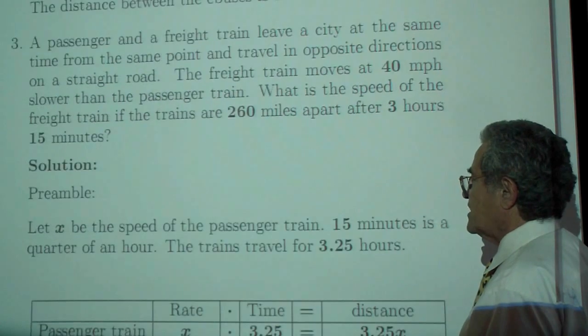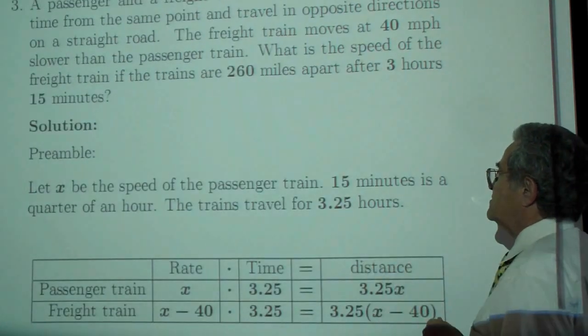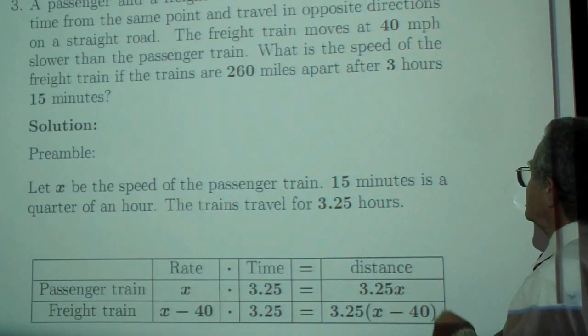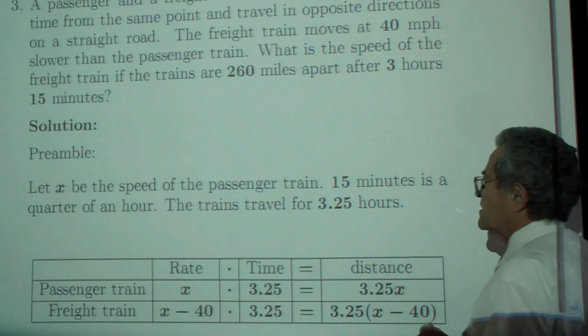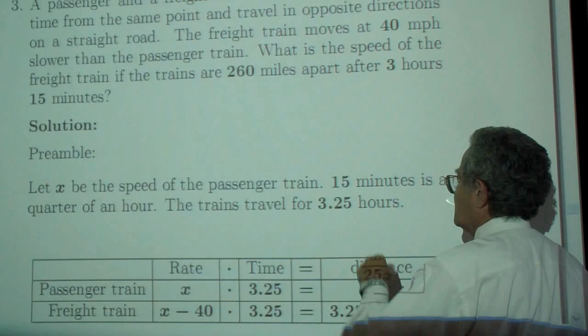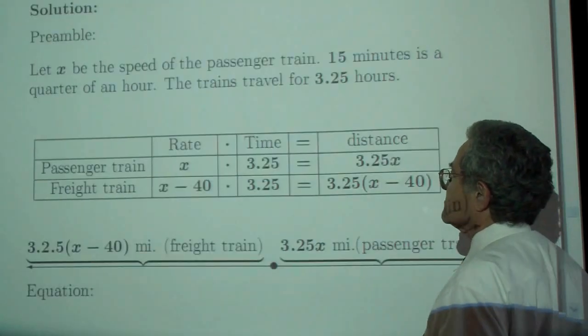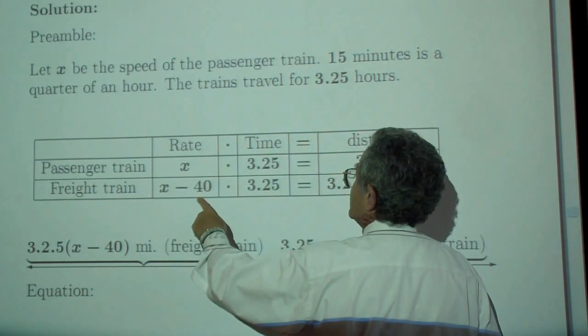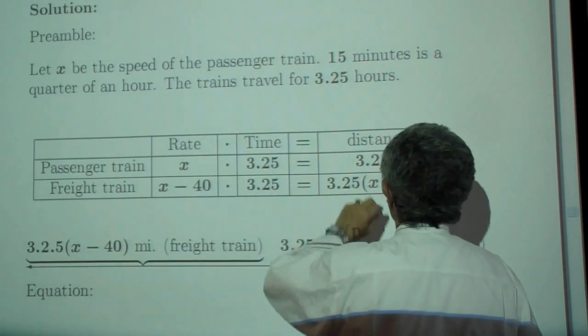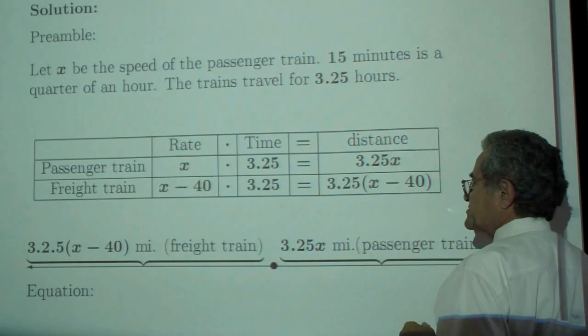And then the passenger train. That's the speed of the passenger train. Note that 15 minutes is a quarter of an hour, so the trains travel for 3.25 hours. The passenger train, the freight train travels at 40 miles per hour less. The time multiplied by the rate gives these two distances.